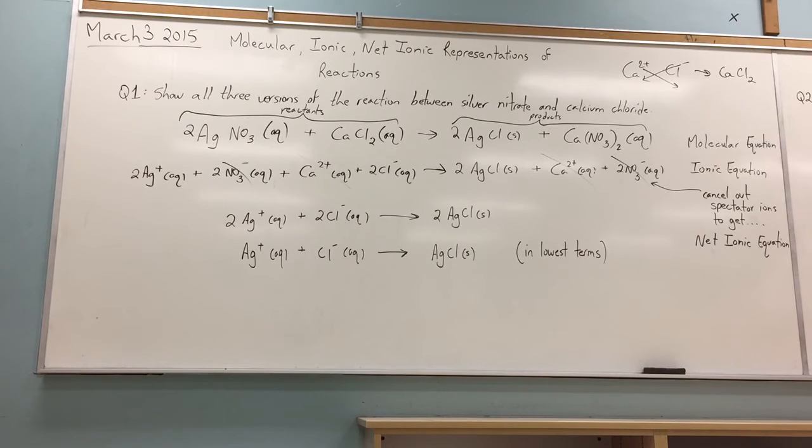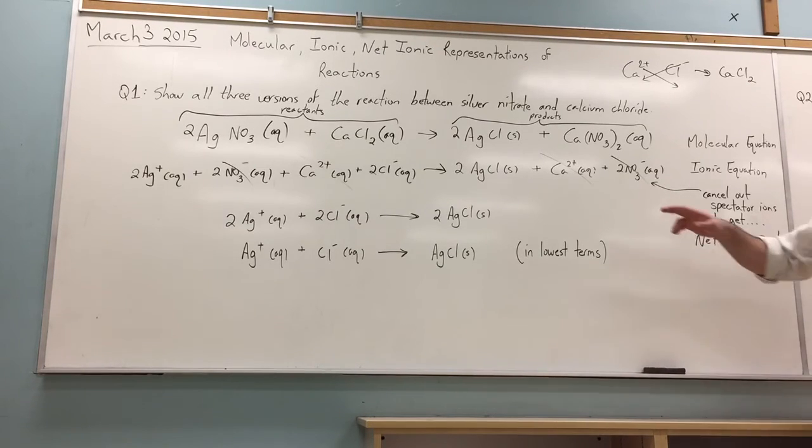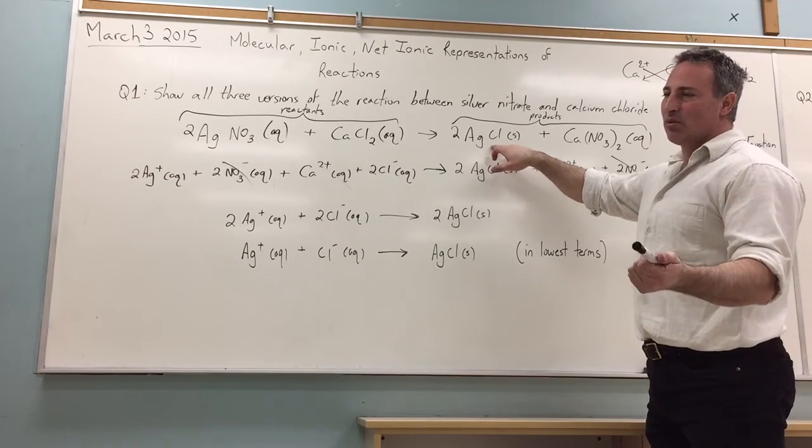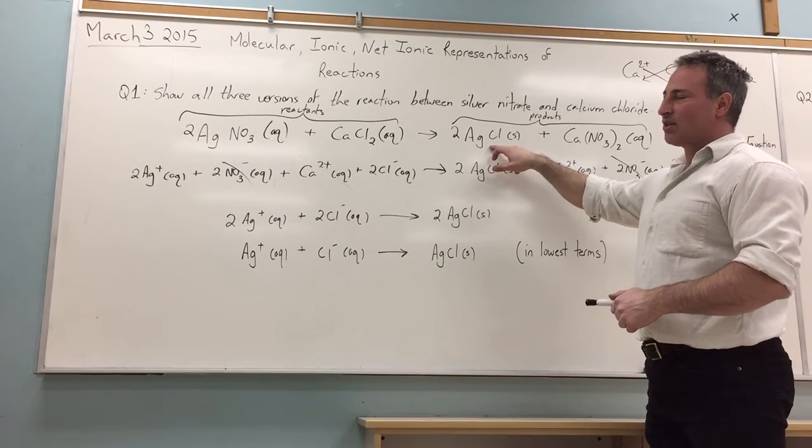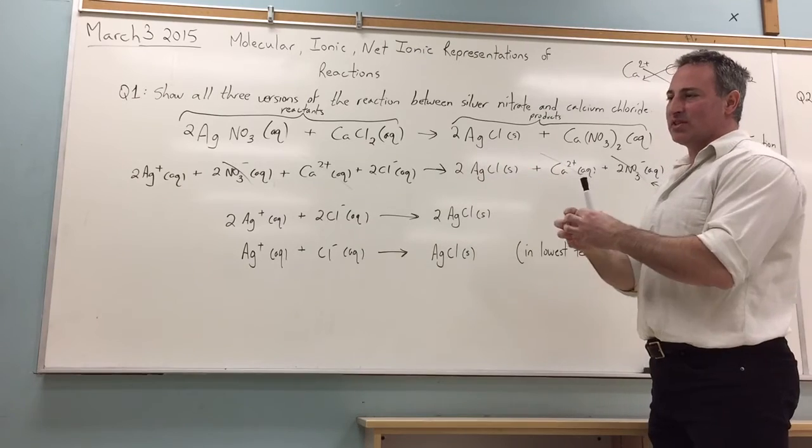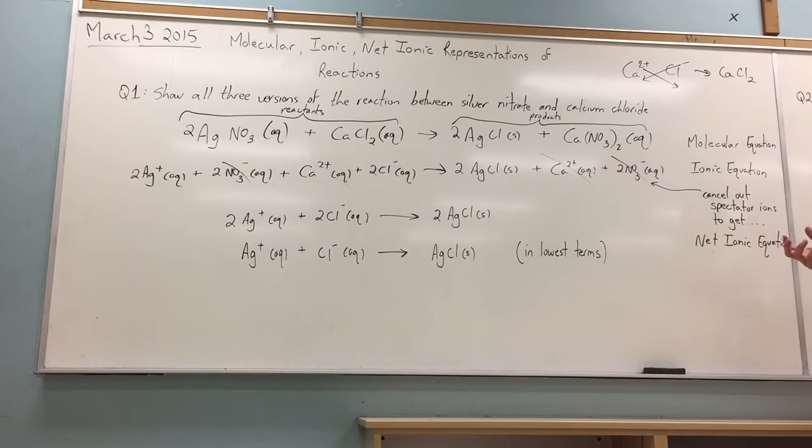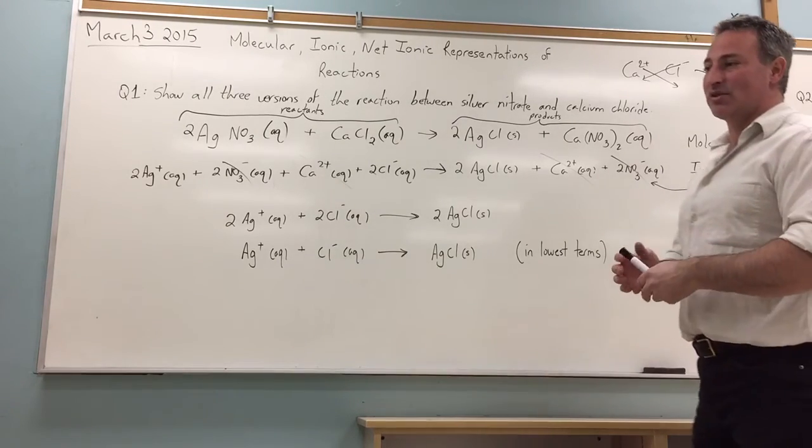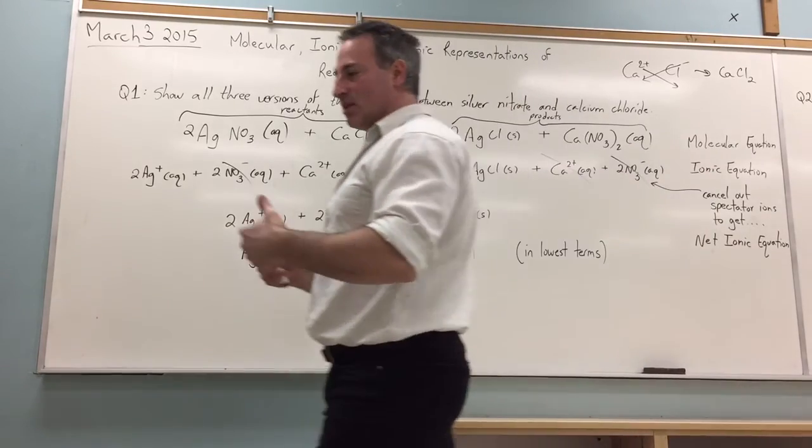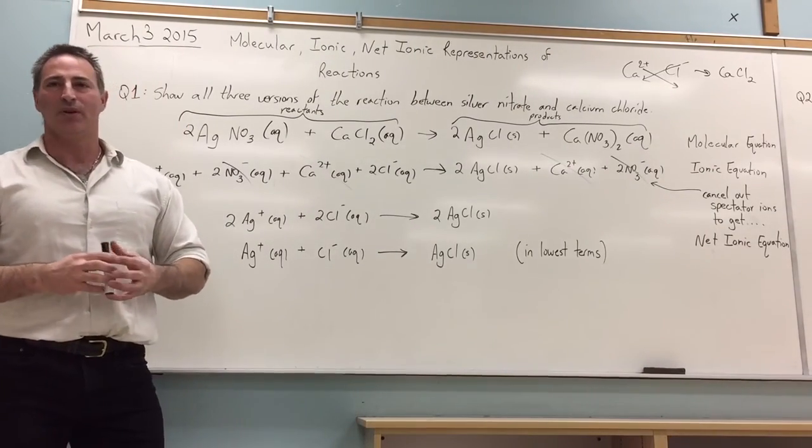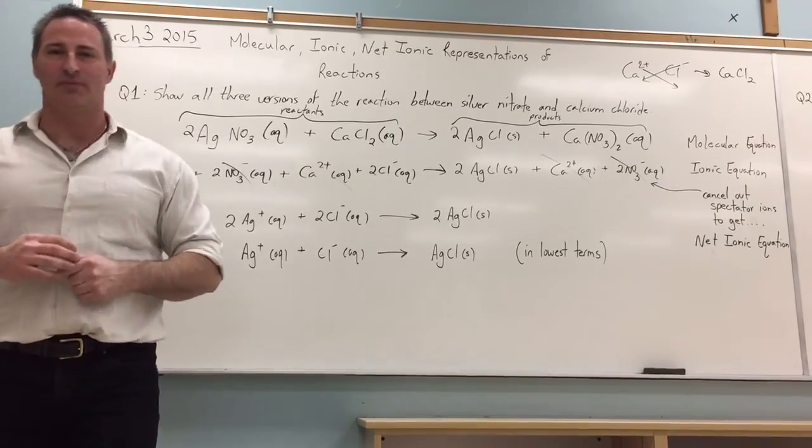Solubility is just a measure of whether the constituent ions, the things that make up the molecule, are more attracted to the water or more attracted to each other. If they're more attracted to each other, they stick together and they form a precipitate. If they're more attracted to the water, they stay in aqueous solution and it looks like a clear solution of water. You can't tell there's actually anything in there unless the two things recombine and come out of solution.